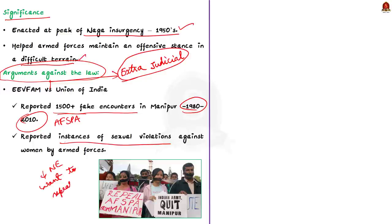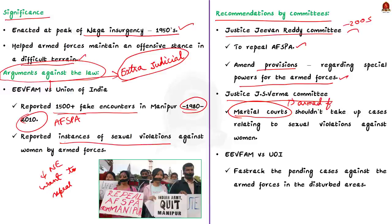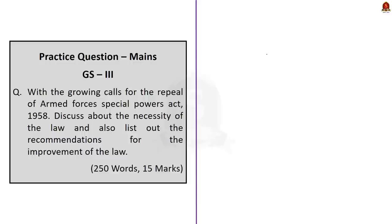Some recommendations for improvement: First, the Justice J.S. Reddy Committee of 2005 recommended repealing AFSPA and suggested amending provisions giving excessive power to armed forces. Second, the Justice J.S. Verma Committee suggested that martial courts (armed forces courts) should not take up cases relating to sexual violence against women by the armed forces. Third, in EEVFAM versus Union of India, the Supreme Court directed the central government to fast-track pending cases against the armed forces in disturbed areas. Through this discussion, we learned what AFSPA is, its important provisions, and recommendations to improve it.